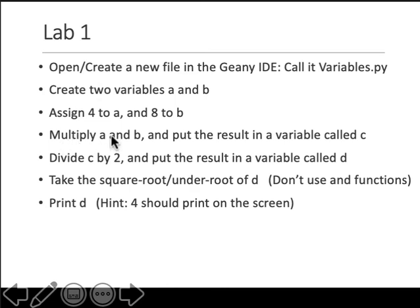Then you multiply those two numbers, put the result in a new variable called c. Then you divide c by two, put in a variable called d, and then take the square root of d. So for the square root of d, you can just d to the power of 0.5. Square root or under root is d to the power of 0.5. And then print d. So please do this lab.